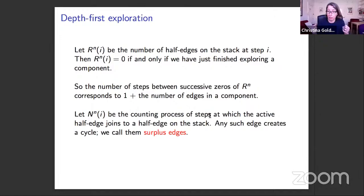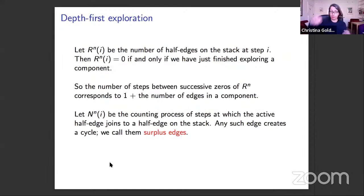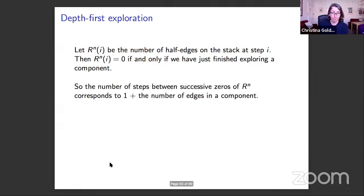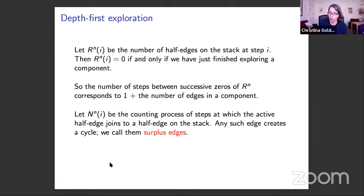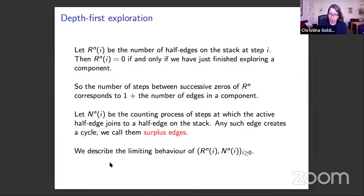To track the difference between numbers of edges and vertices, we keep a counting process N_n(i) that counts steps where an active half-edge joins a half-edge on the stack — each such event creates a cycle, so these are called surplus edges. N_n(i) tracks the number of surplus edges observed up to step i. The aim is to describe the limiting behaviour of this pair of processes: the stack size process and the surplus edge counting process.